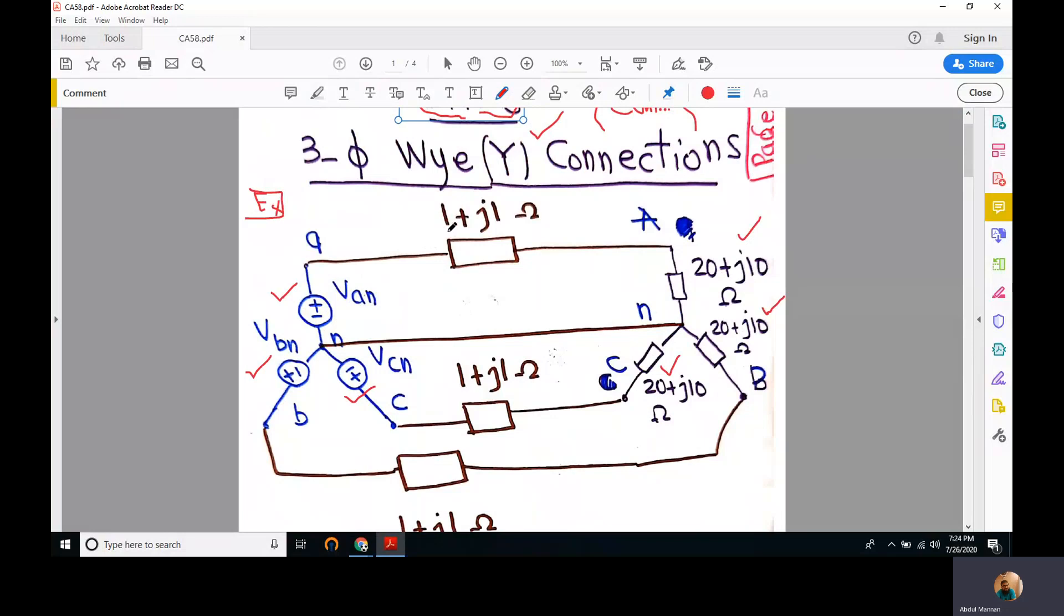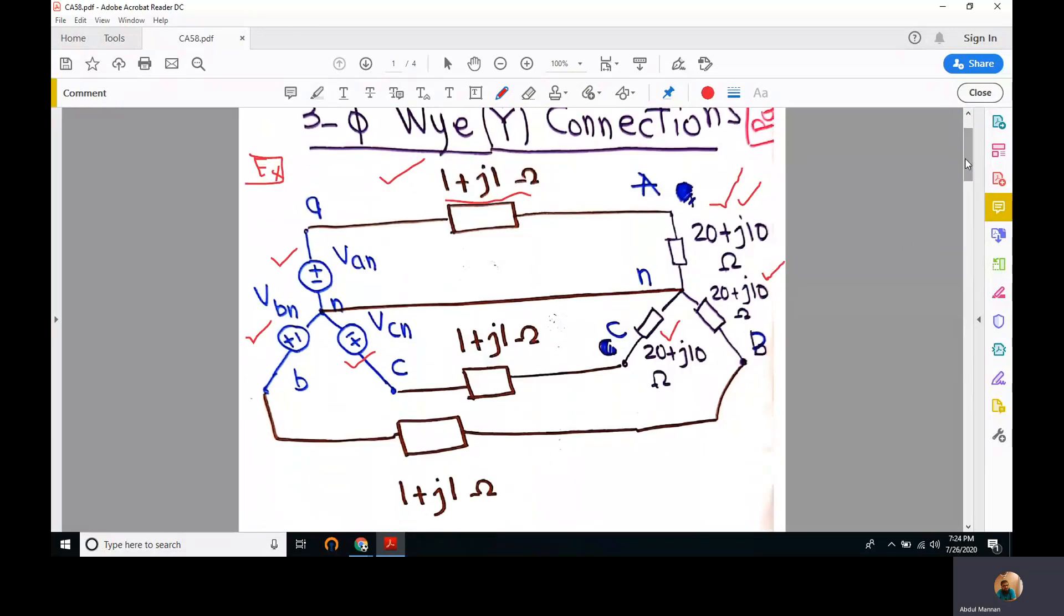There is also a line impedance of one plus j one ohms. The line resistance is one ohm, the line reactance is j one ohms. This is the equivalent line impedance, and this is the impedance of the load. We have also assumed there is no impedance in the neutral line, the ground line.